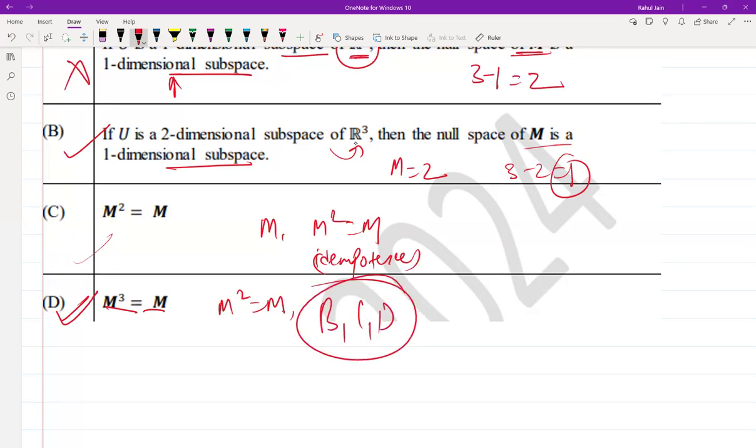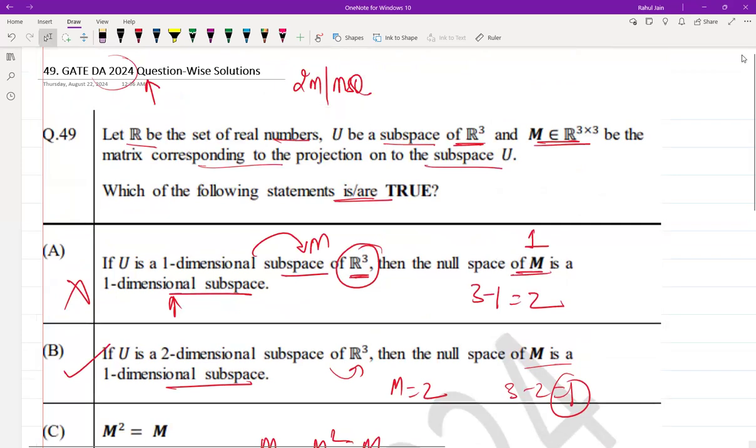Thus option B, option C, and option D are the correct answers for this GATE question which was asked as MSQ in GATE 2024. I hope the solutions are clear.